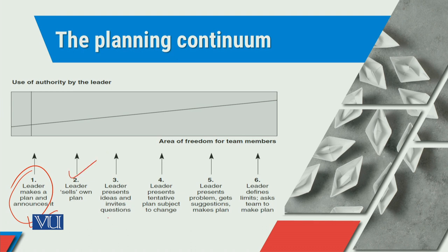The next step would be the leader presents ideas and invites questions. Iske baad, the leader presents a tentative plan subject to change. Iske baad hum baat kar saktay hai ke leader presents problems, gets suggestions and makes plans. Yeh hain par kiya raha hai ke aahistah ahistah hum loogun ko delegation of authority or empowerment dhe rahe hai, hum unki will ko use kar rahe hai, kam ko takmil tak pehunchanne ke liye. Or leader ka jo particular authority or role hai, it is getting diluted.